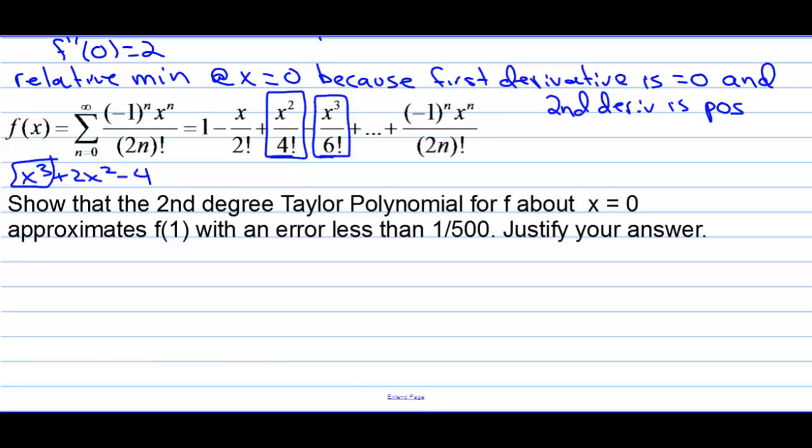So, the error will be less than 1 over 6 factorial. That's the first omitted term, and it's when we plug 1 in for the x, which is equal to 1 over 720, which is less than 1 over 500. Now, how can we, we haven't written down why we can make this claim. So, it says justify your answer.